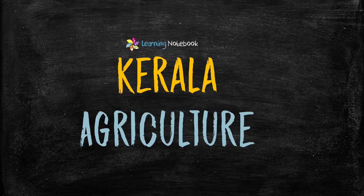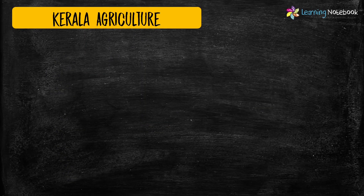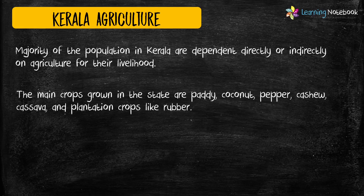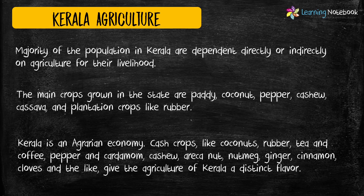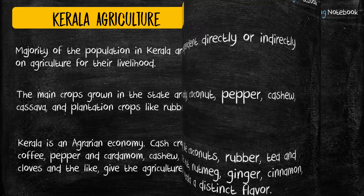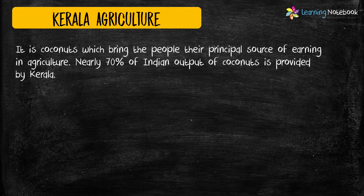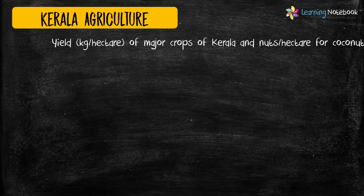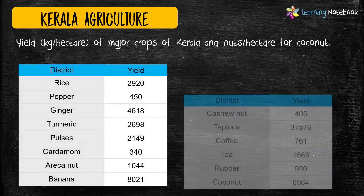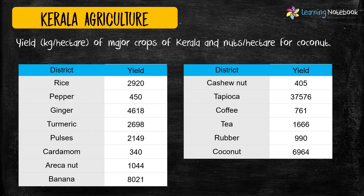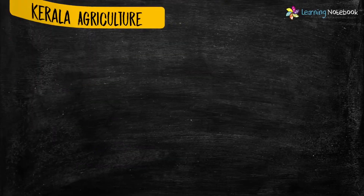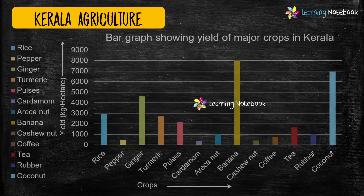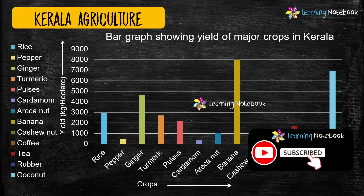The last topic, and one of the most important topics for your Maths Art Integrated project, is Agriculture of Kerala. Students, you can show the yield of major crops in Kerala using a bar graph.